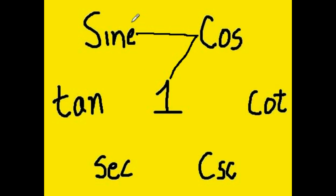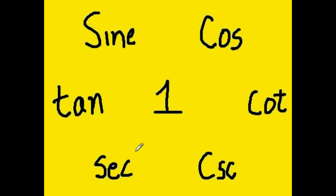And what do we have? Sine squared plus cosine squared equals one squared. Wow, that easy. Let's do it again.